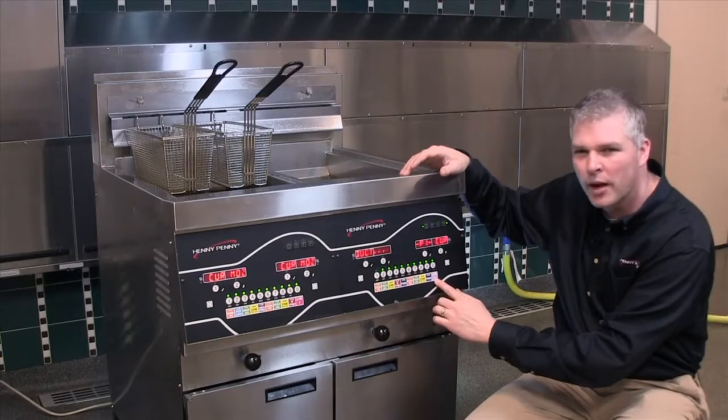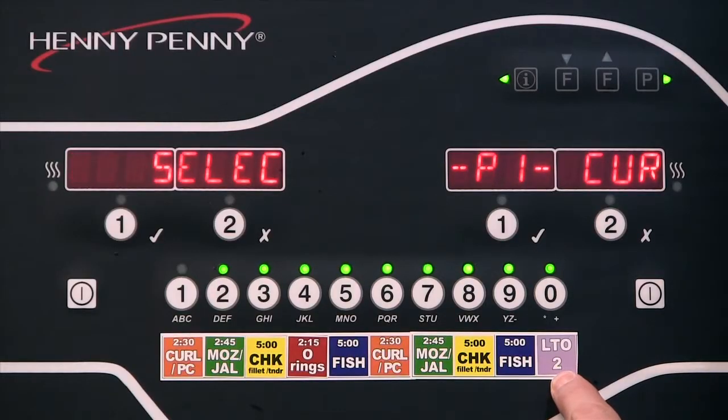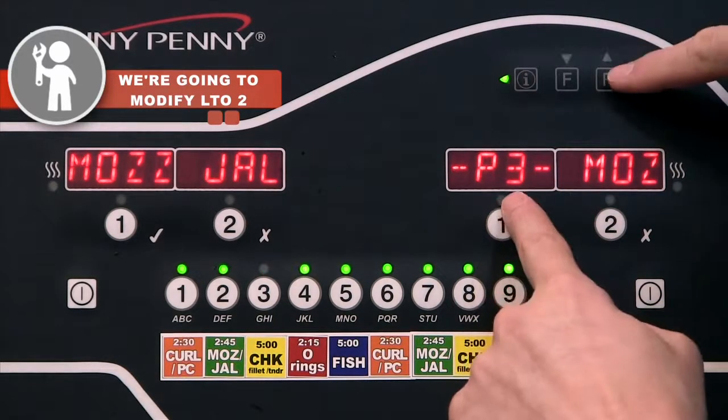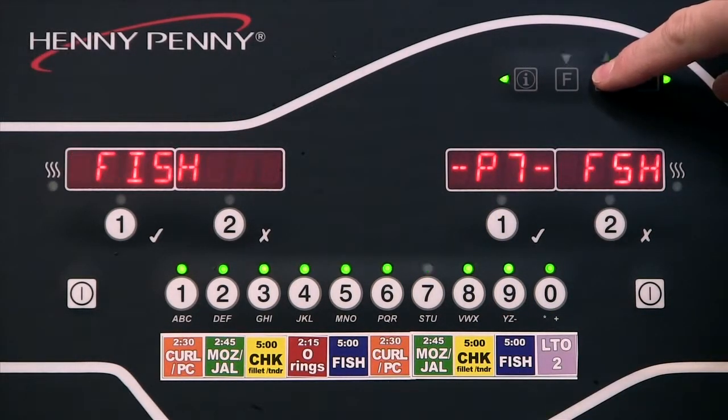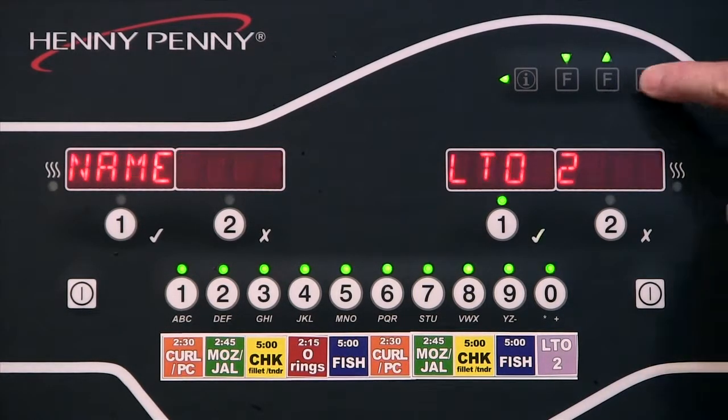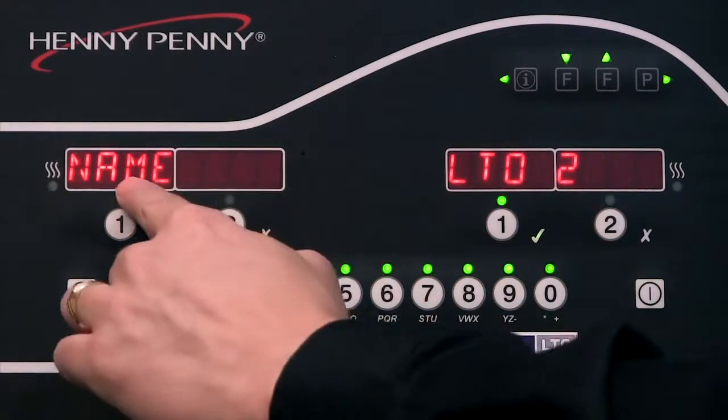What I want to do is find my LT2 product so I can alter the cook time on this. So I'm going to use this up arrow and cycle through my steps until I find LT2. There's LT1, here's LT2, and that's the one I'm going to modify.